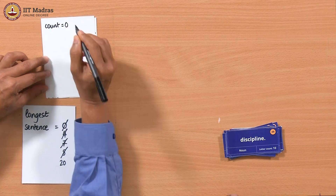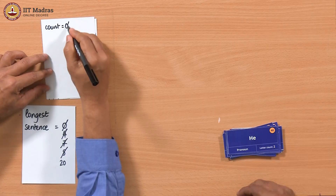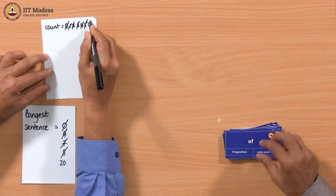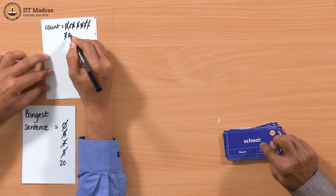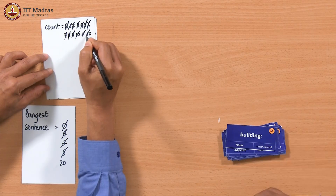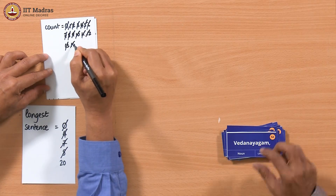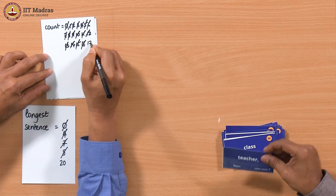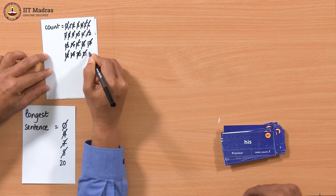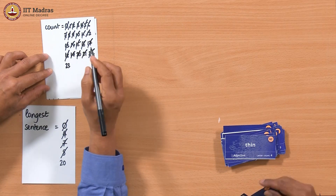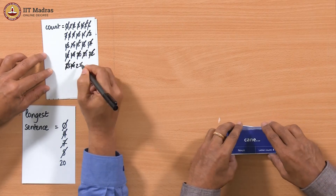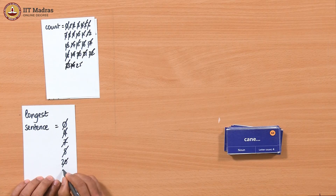I doubt that there will be another sentence longer than this one, but let us see: 1, 2, 3, 4, 5, 6, 7, 8 — colon — 9, 10, 11 — colon — 13, 14, 15, 16, 17, 18 — comma — 19, 20, 21, 22, 23, 24, 25. So the last sentence was actually the longest and it had 25 words.